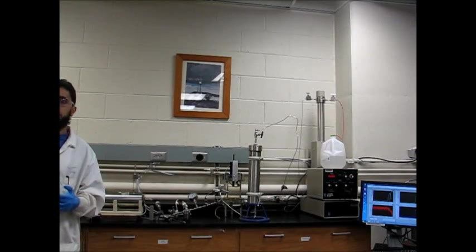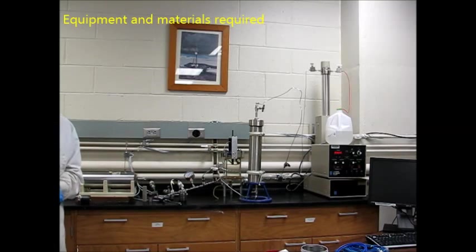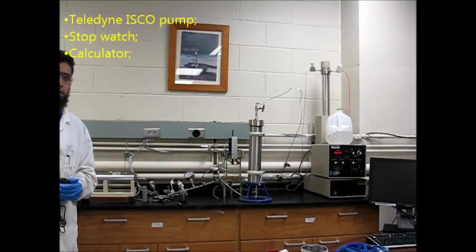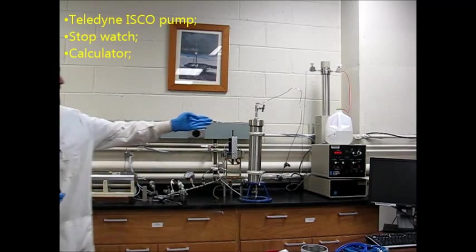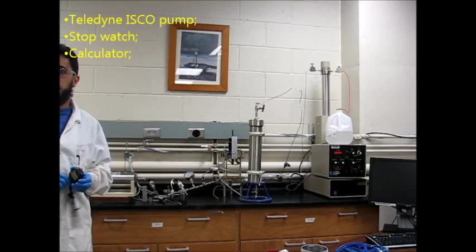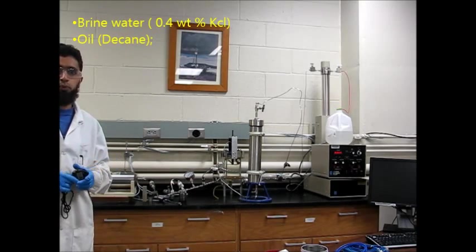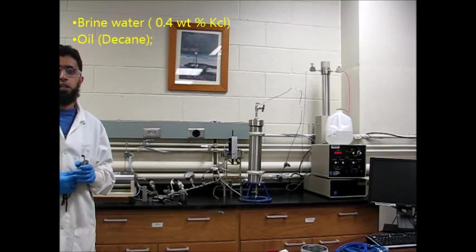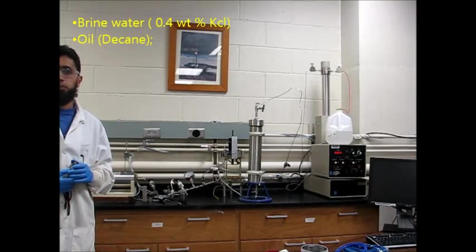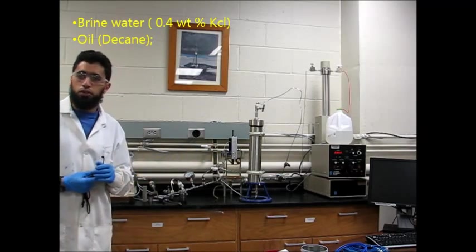Fw equals Qw divided by Qtotal. The equipment and material required for this experiment is a Tilden, is Qubamp, and stopwatch to measure the time for the flow rate, calculator to calculate the recovery factor and water cut, and brine concentration, 0.4 weight percentage KCl, potassium chloride, and oil.